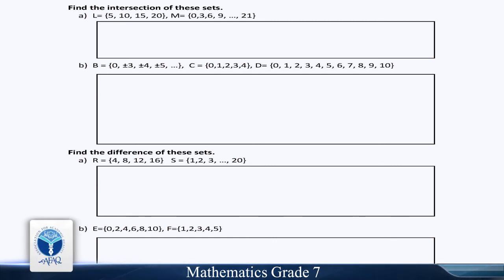Part B: B is equal to 0, plus minus 3, plus minus 4, plus minus 5, and so on. C is equal to 0, 1, 2, 3, 4, 5, 6, 7, 8, 9, 10.